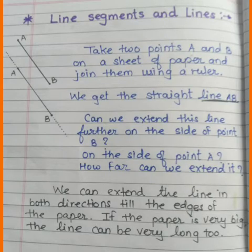Take two points A and B on a sheet of paper and join them using a ruler. We get the straight line AB.